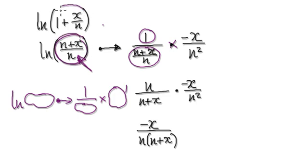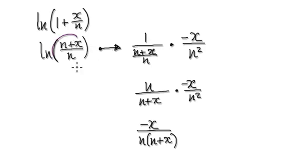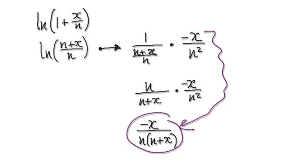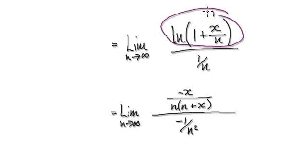When you differentiate the bubble with respect to n, the constant terms give zero. Differentiating the remaining part brings the minus one power down, x is a constant, the power gets reduced by one. Tidy that up and it gives you this expression here for the derivative of the numerator.